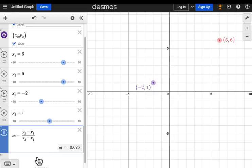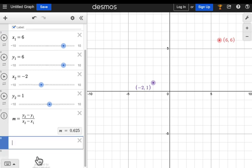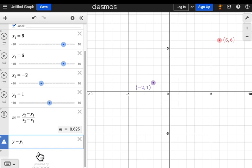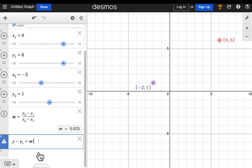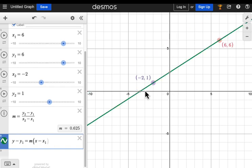We now have all the components to use the point slope form. Input the point slope form, y minus y1 equals m, the slope, times x minus x1. And you'll see the graph of the line that crosses the two points that you graphed.